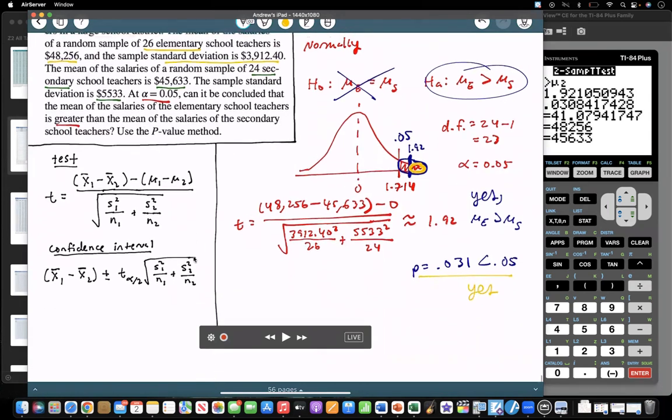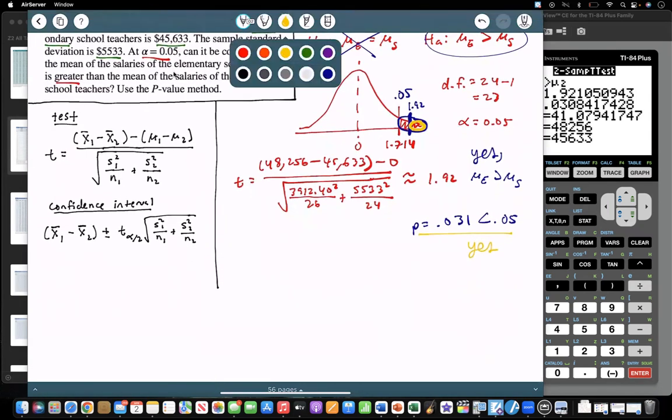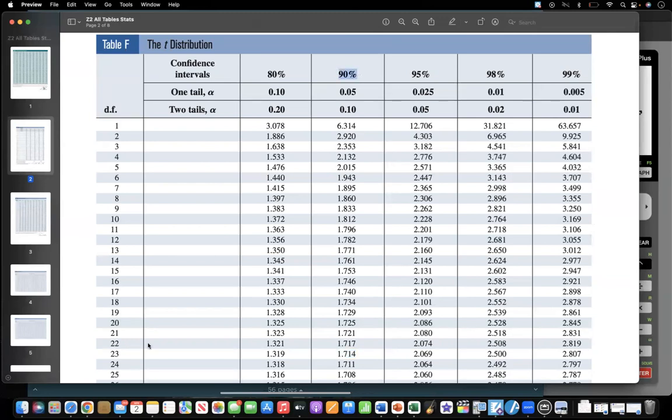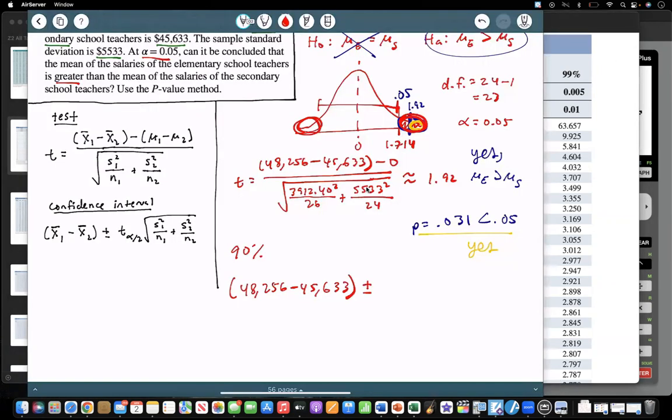So for the confidence interval, if I wanted to write a confidence interval, let's say we want to do... We'll keep that same 5% of the tail. So if I do 5% of that tail, 5% of that tail, that would be the middle 90%. So we'll do a 90% confidence interval. So we subtract the means. So I subtract the two means. And then I can add and subtract off my T values, so I can go back to my table once again. So confidence interval 90% will be this column. So it looks like you'll have the same 1.714 at 23 degrees of freedom. But depending on whatever confidence interval, you just choose that column. So I'll use the same 1.714. And then 3912.40 squared over the 26 plus 5533 squared over the 24.